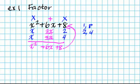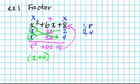When I factor, I grab the top left x and write it down with the bottom right 4 — so I write x plus 4. Then I grab the bottom left x and combine it with that positive 2. So my factors of x squared plus 6x plus 8 are x plus 4 times x plus 2.